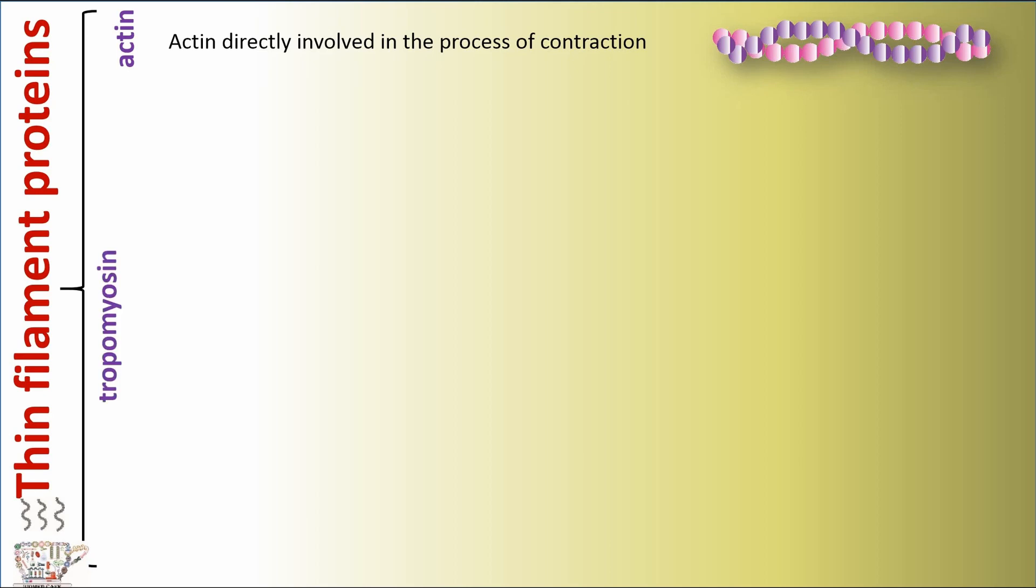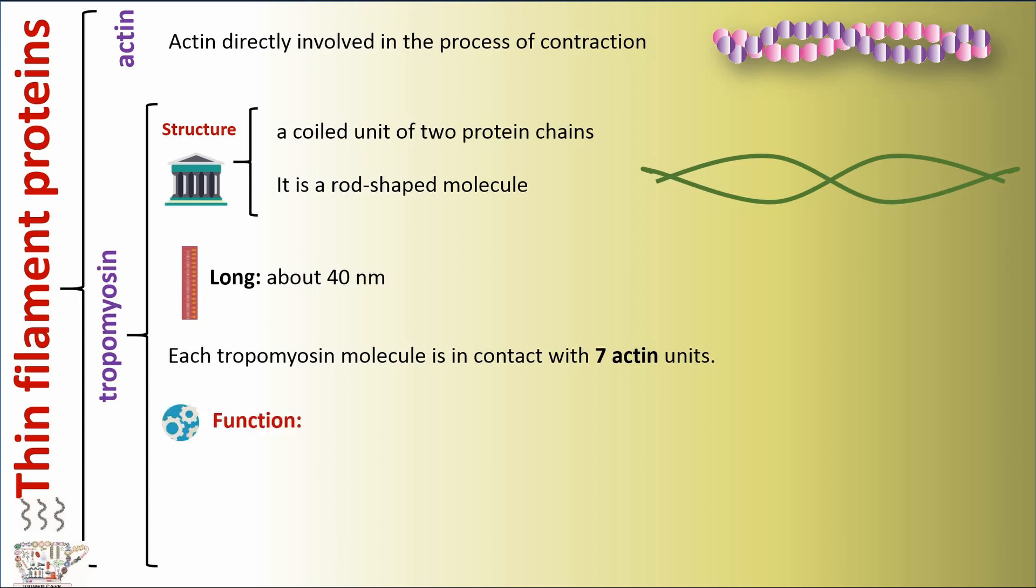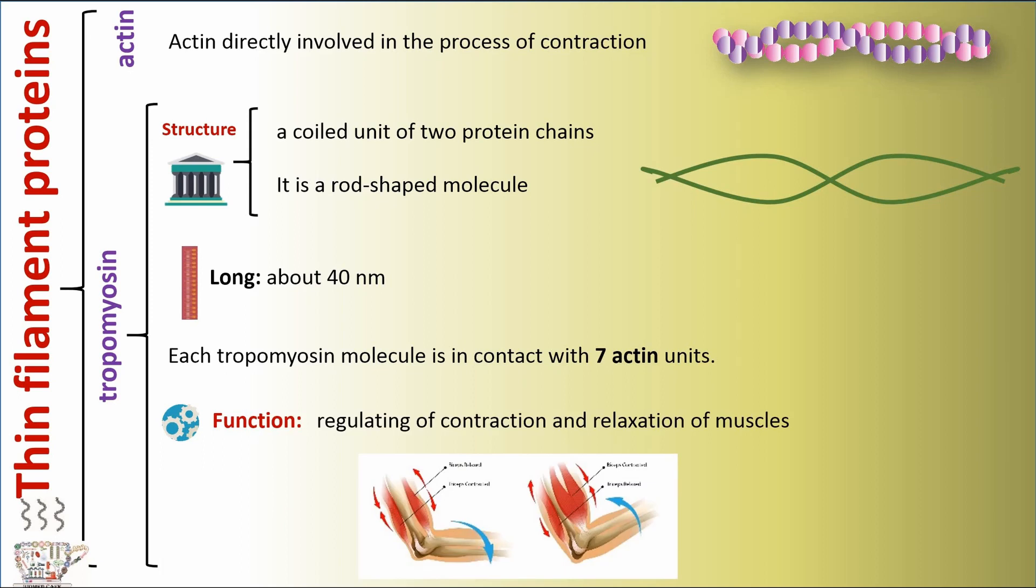The second protein is tropomyosin. Tropomyosin is a coiled unit of two protein chains. It's a rod-shaped molecule with a length of about 40 nanometers. Each tropomyosin molecule is in contact with seven actin units. It plays a role in regulating contraction and relaxation of muscles.